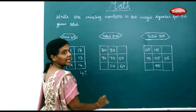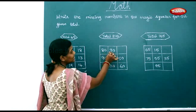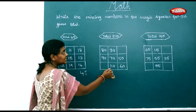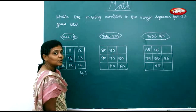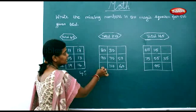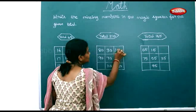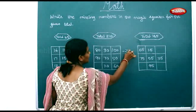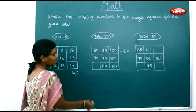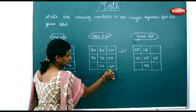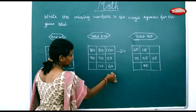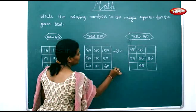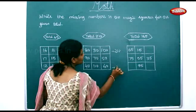80 plus 30 makes 110. 110 plus 100 gives you 210. In the same way, 110 plus 60 gives you 170, and 170 plus 40 gives you 210.